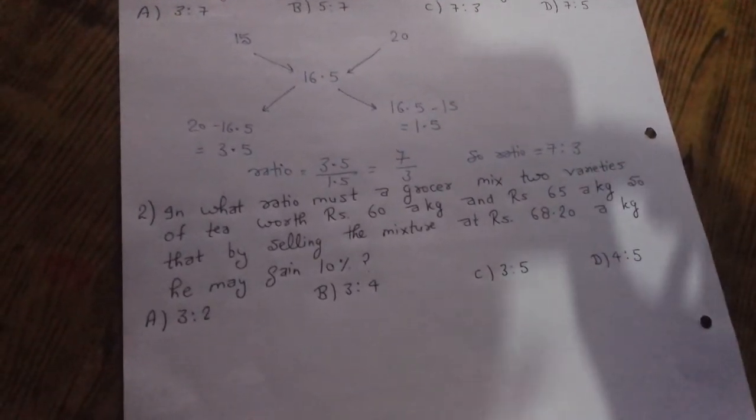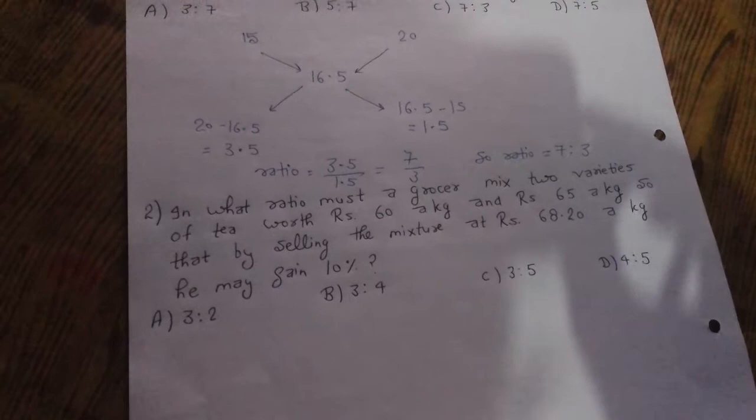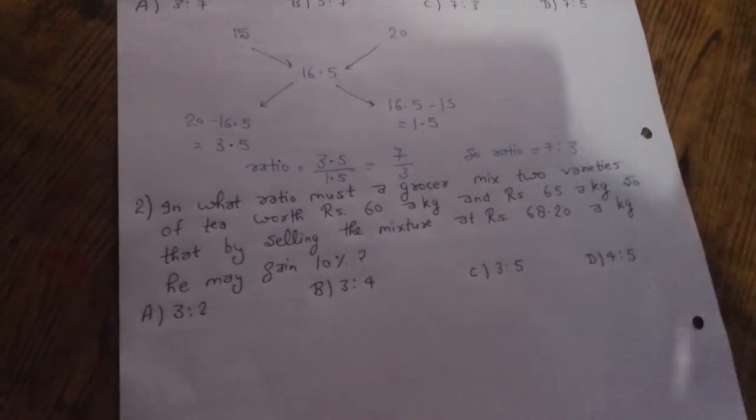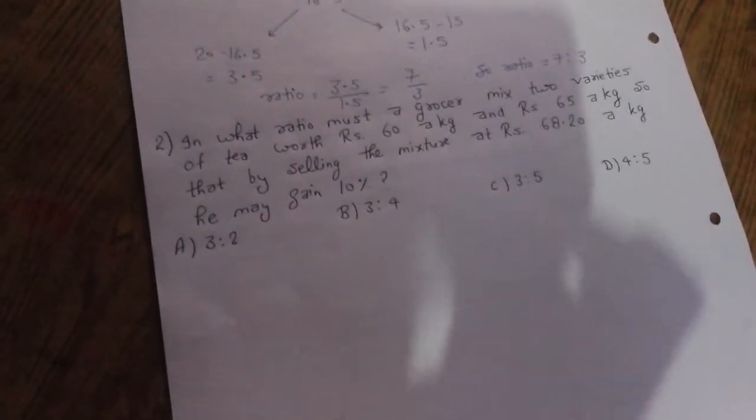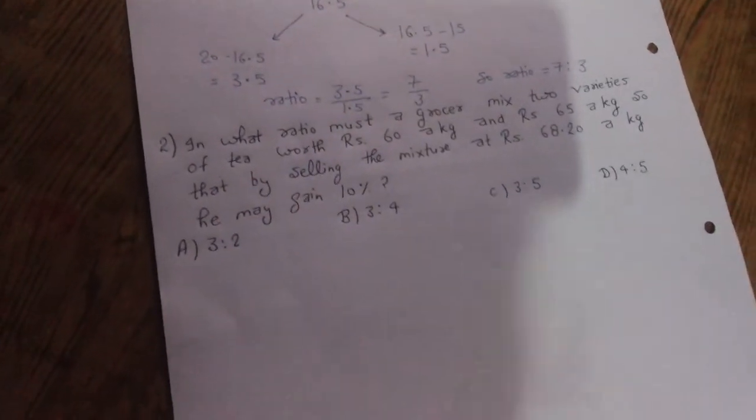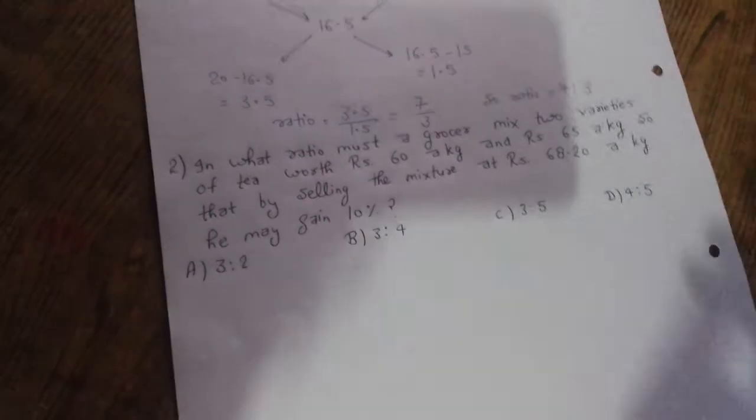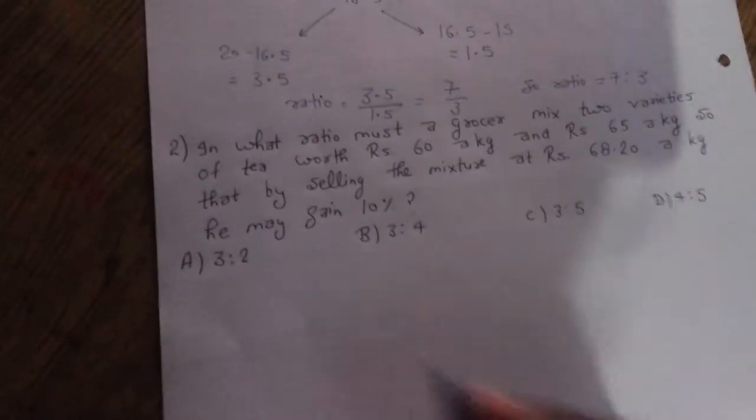We know that for alligation and mixture the mean value is given. So first of all, if we get selling price, then we easily get cost price.